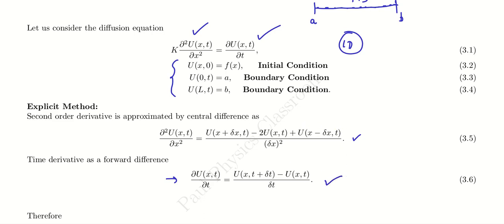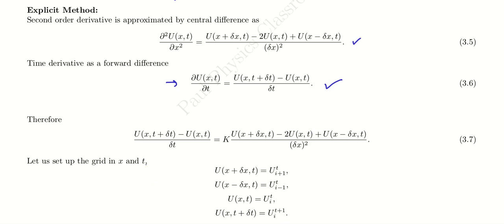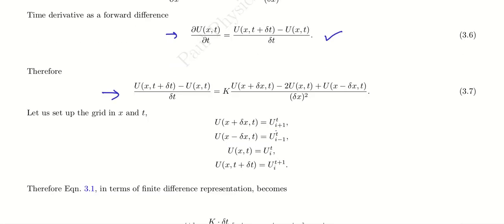Therefore, putting all these terms into equation 3.1, we will get the discretized equation straightforwardly. After that, we use grid or index notation: u(x + dx, t) is represented as u subscript i+1 superscript t, u(x - dx, t) is represented as u subscript i-1 superscript t. The superscript t indicates the time instant at which u is being calculated. u(x, t) is u_i^t and u(x, t + dt) in forward time is represented as u_i^{t+1}.